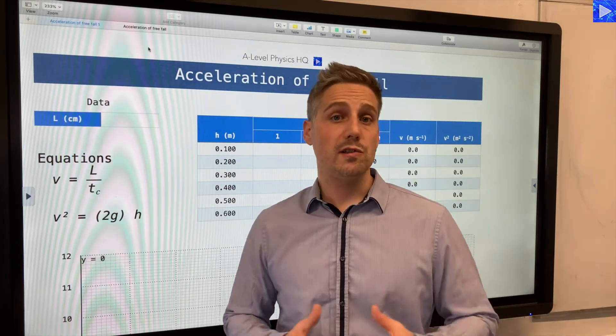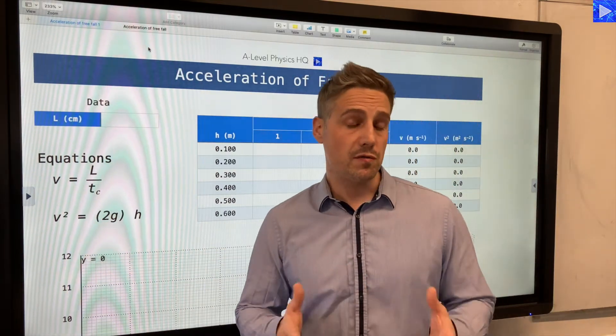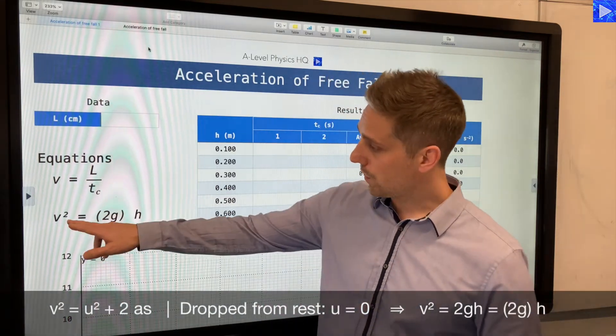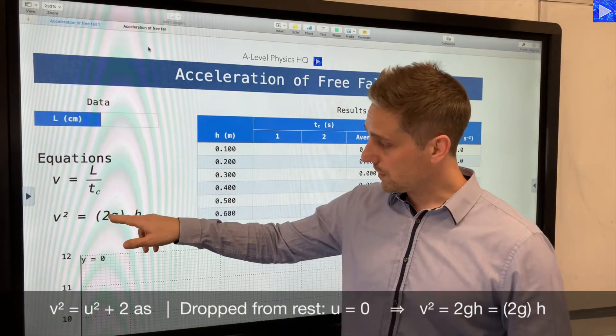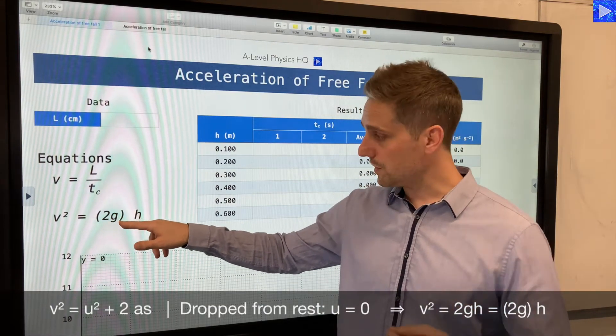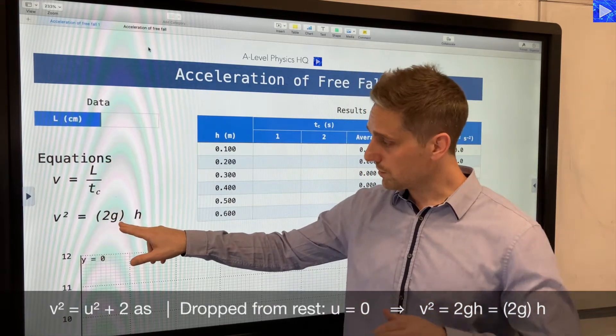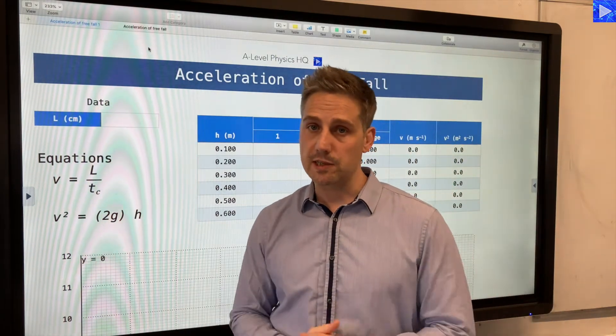The equation we're going to use to analyze the experiment is one of the equations of uniform acceleration: v² = u² + 2as. Since u² is zero, it's just v² = 2 times acceleration, which in this case is g, multiplied by h, which is our displacement value.